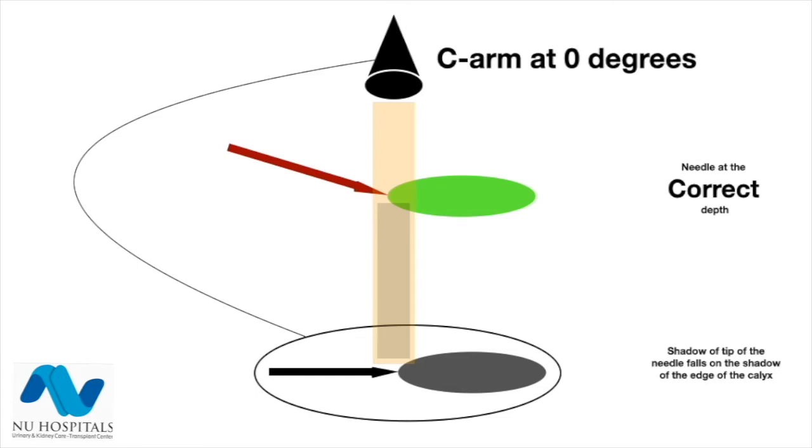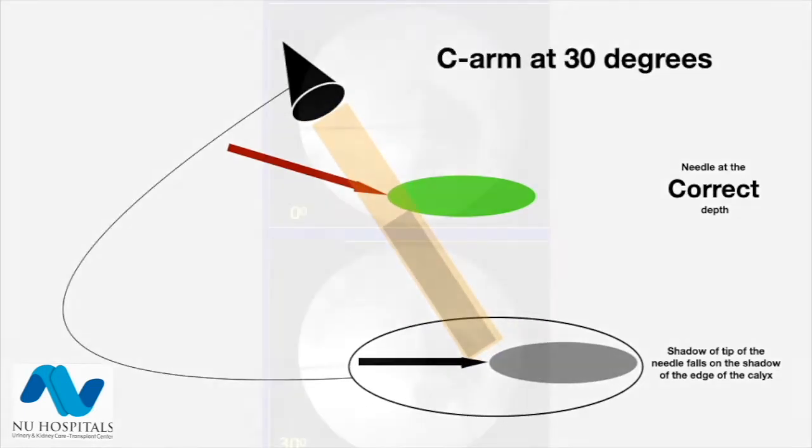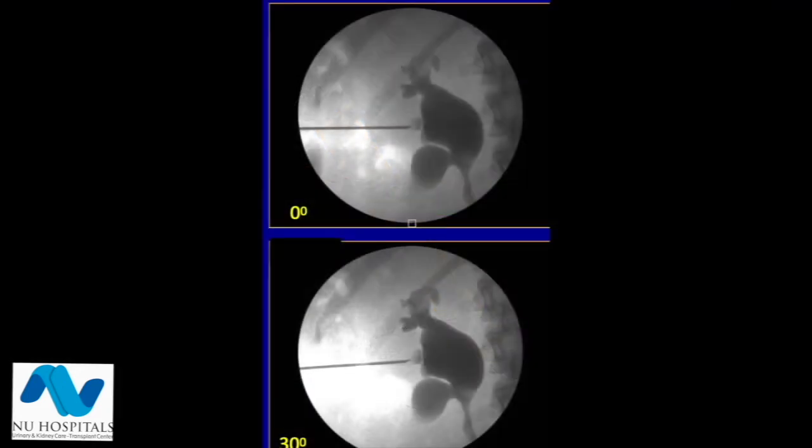Let us assume you are at the correct depth. Once the needle has reached the edge of the calyx correctly and you turn the C-arm towards the surgeon, you will see that the tip of the needle will continue to point at the edge of the calyx. Here the needle has reached the edge of the calyx at zero degrees. When we turn to 30 degrees the needle is again pointing at the edge of the calyx, therefore we are at the correct place.